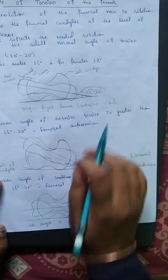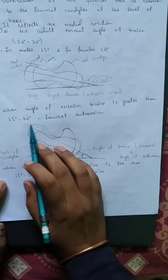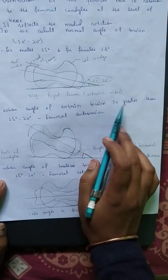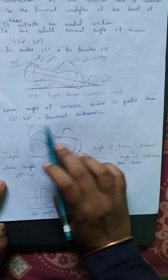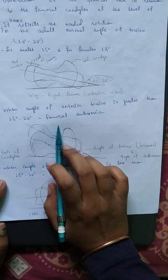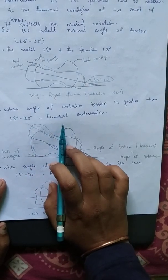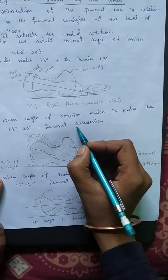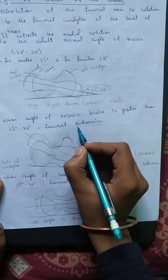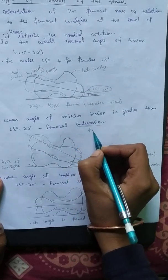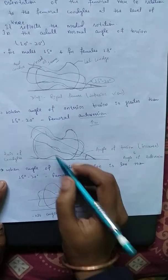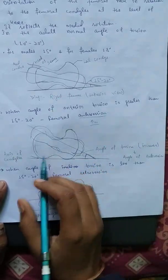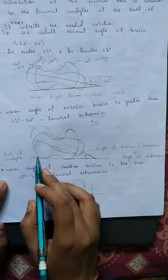When the angle of torsion is greater than 15 to 20 degrees, this condition is known as femoral anteversion. Anteversion means the femoral neck is angled forward beyond the normal range.